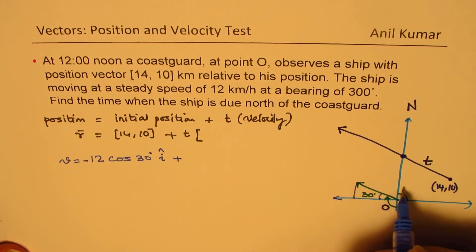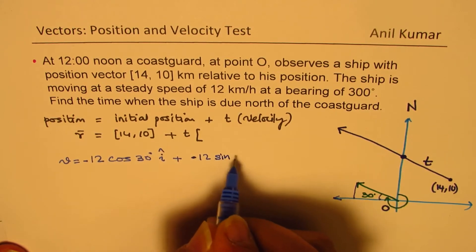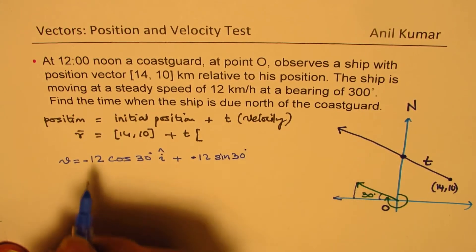Plus upwards, we have 12 sine of 30 degrees.